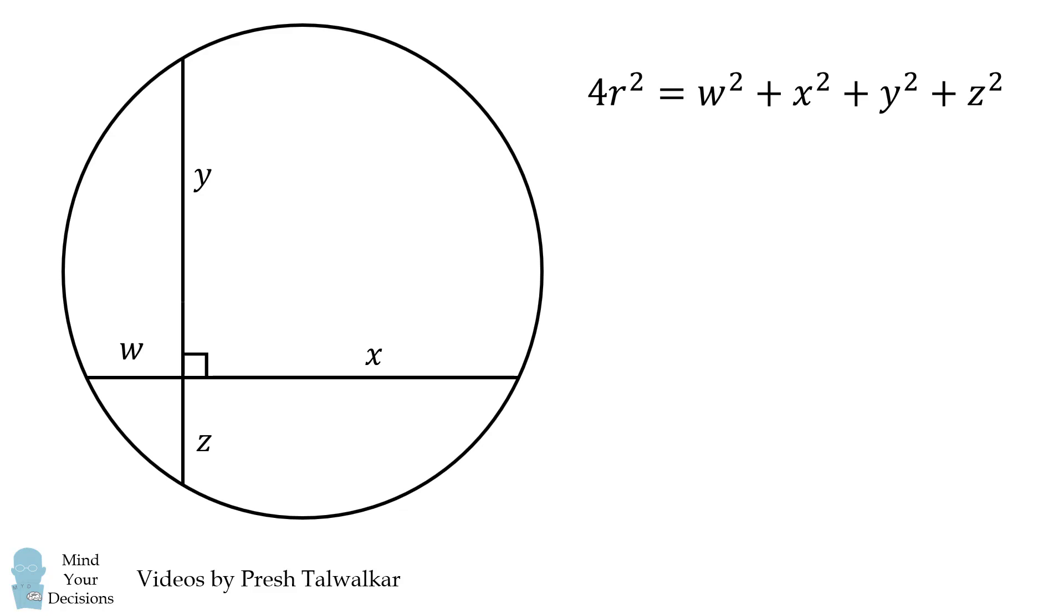Four times the radius squared is equal to sum of the squares of these four values. So let's use this formula to solve our problem.